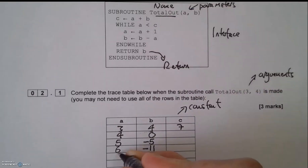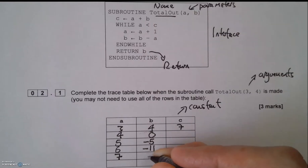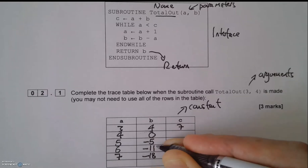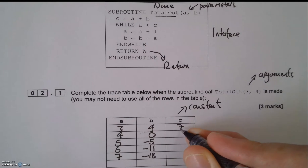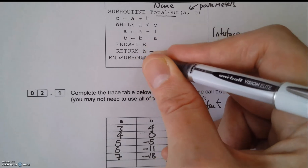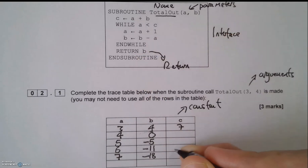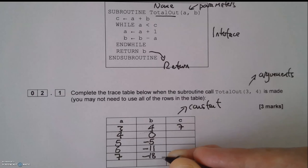Is a less than c? Yes, still — 6 is less than 7. So a equals a plus 1, that's now 7. Then b equals b minus a: negative 11 take away 7 is negative 18. Now is a less than c? No — they're equal, so the loop stops. It would return b, which is negative 18 — that's the value returned to the main program. And that is a trace table.